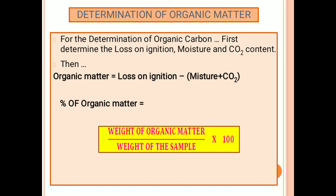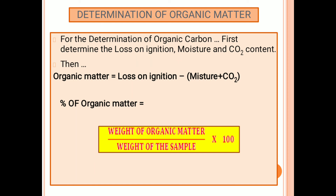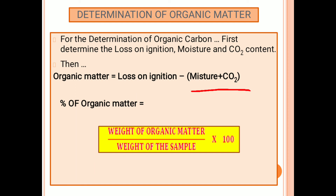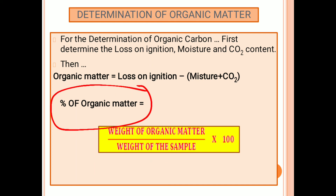For the determination of organic matter, first you need to determine the loss on ignition, moisture, and carbon dioxide content. Then: organic matter = loss on ignition − (moisture + carbon dioxide content). The percentage of organic matter equals the weight of organic matter divided by the weight of sample, multiplied by 100.